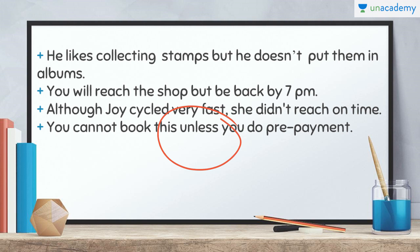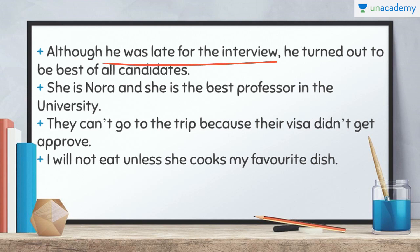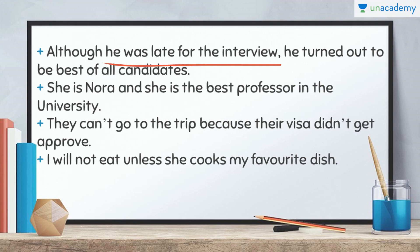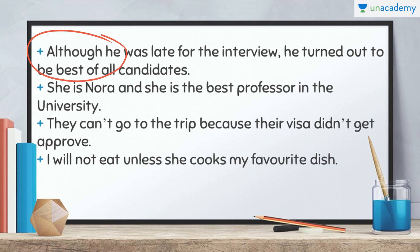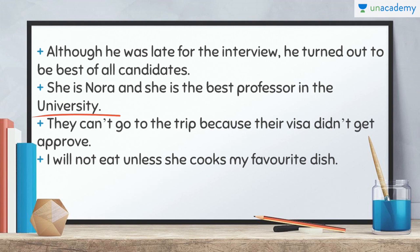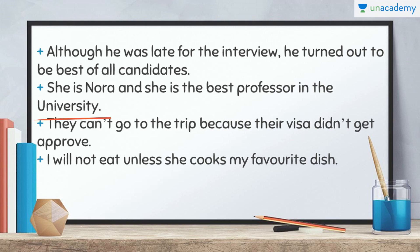Ninth: 'Although he was late for the interview, he turned out to be best of all candidates.' He was late — meaning he was supposed to have some bad impact — but he is turning out to be the best. In spite of that, he is still the best. We replace 'in spite of' using 'although' as a conjunction, placed at the start of the sentence with a comma before the later part. Tenth: 'She is Nora and she is the best professor in the university.' Simple sentences — one gives her name, the other describes her performance — joined using 'and'.